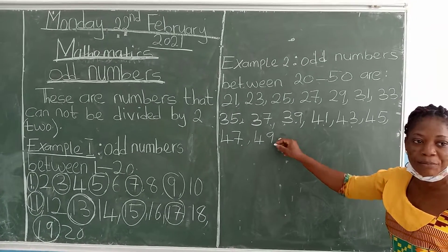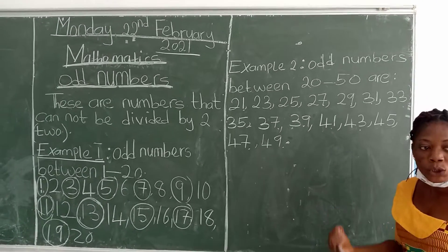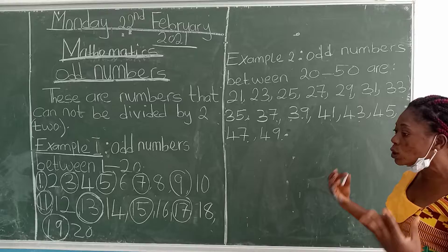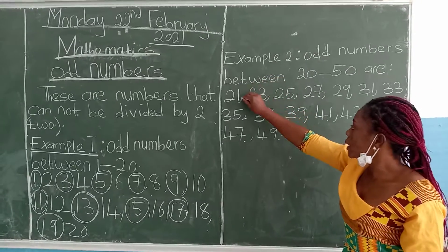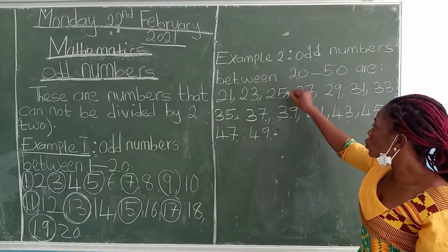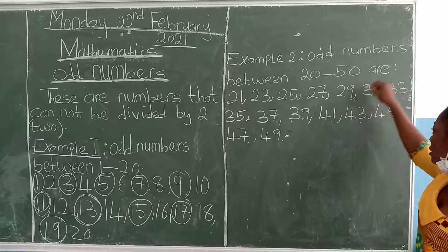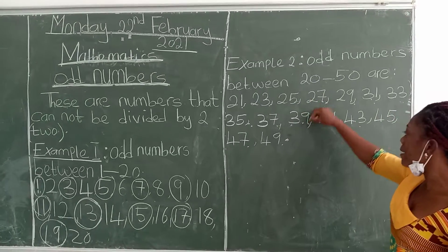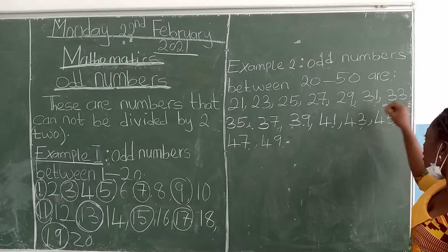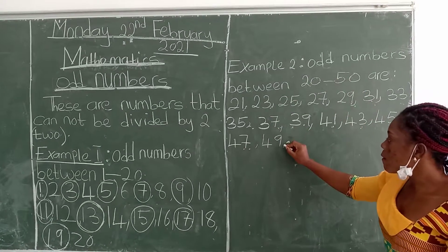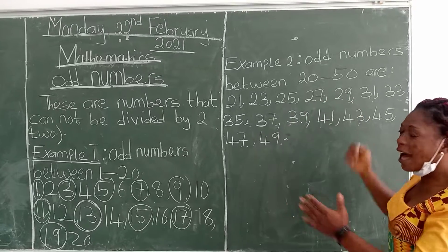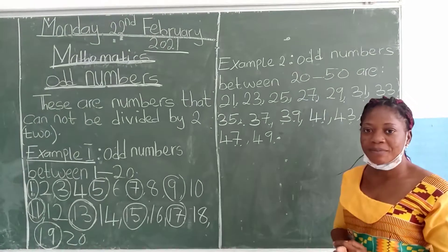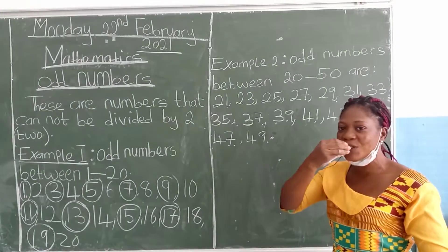Family and friends, can you repeat after me — examples of odd numbers between 20 and 50. These are the examples of odd numbers between 20 and 50. Thank you. See you. I love you all.